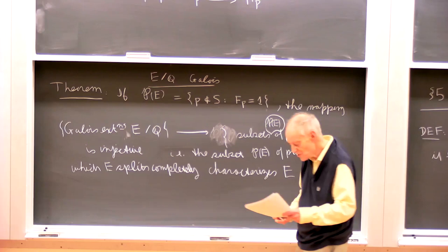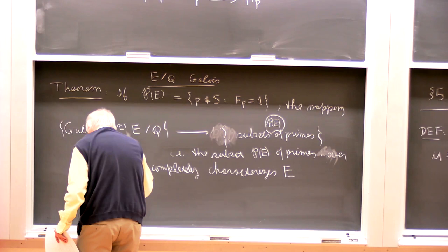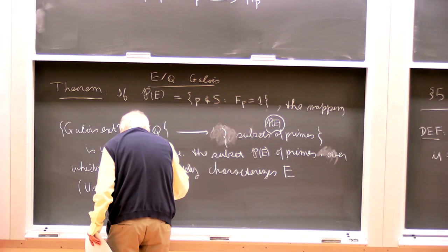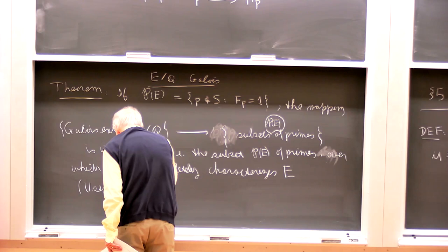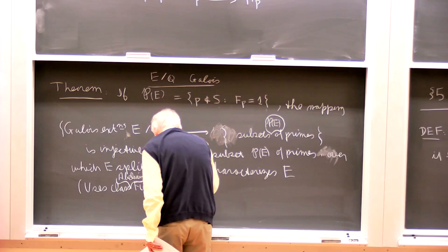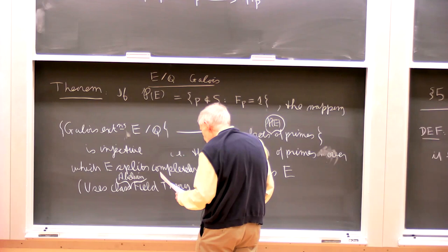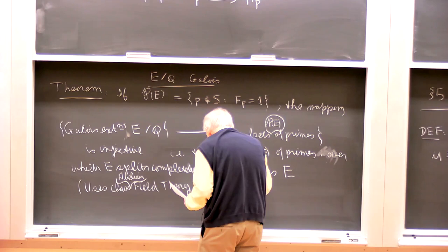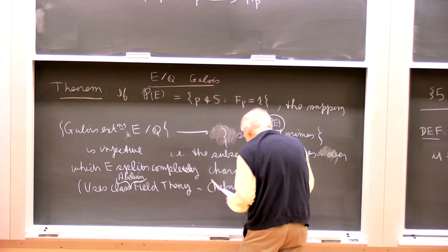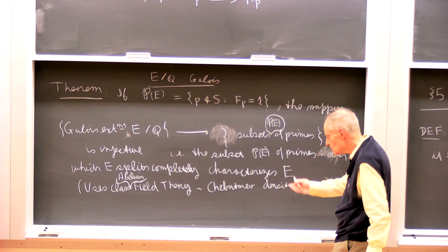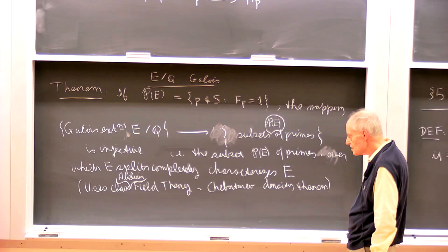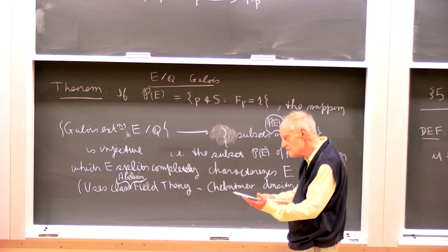This uses abelian class field theory — it's a consequence of what's called the Chebotarev density theorem, which in turn follows from abelian class field theory, a big piece of what goes into the Langlands program.